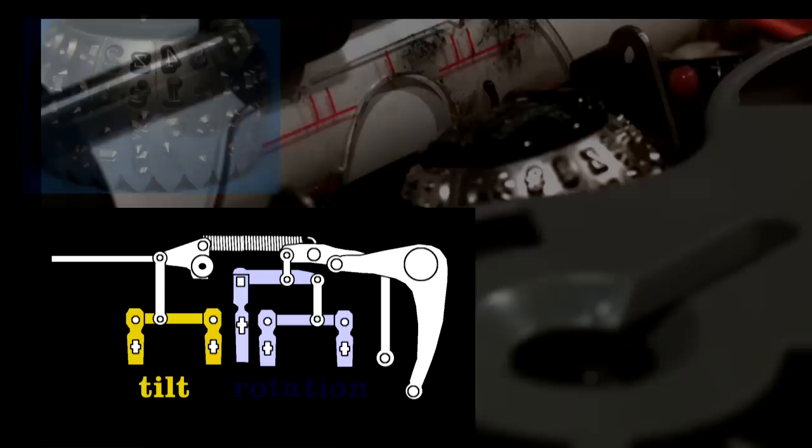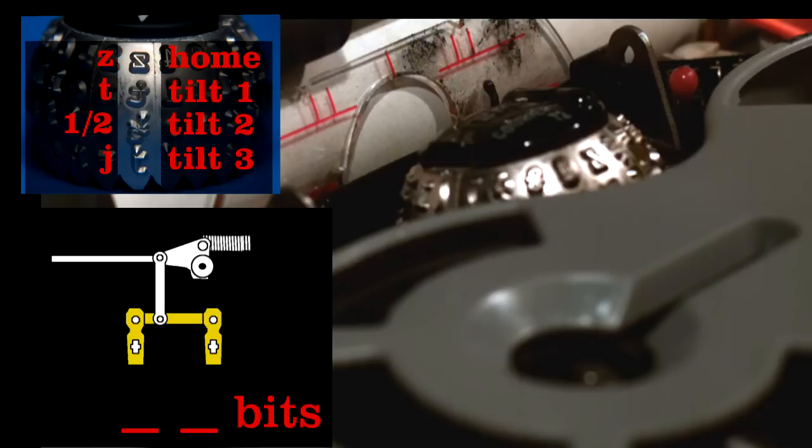Let's look at only the tilt mechanism. It requires two bits of information to access the four rows on the ball. The home position plus three tilt positions.